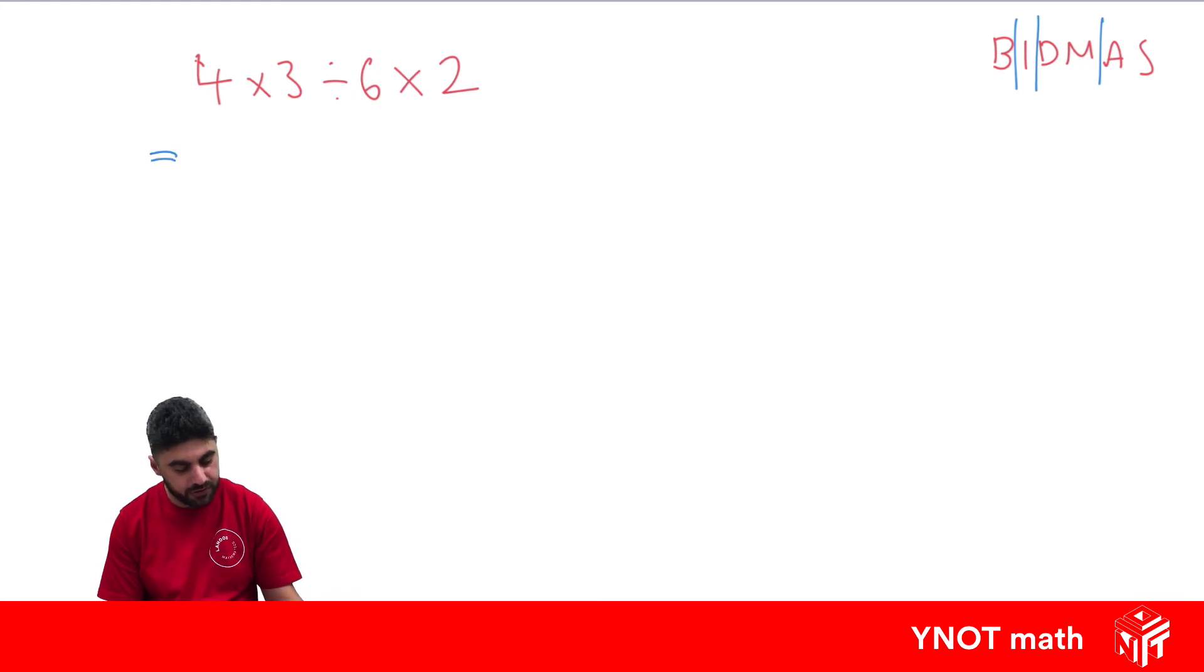So 4 times 3 first is going to give us 12. And we just keep working from left to right. So 12 divided by 6 is going to give us 2. Still need to times by 2 in the end. And 2 times 2 is going to be 4.